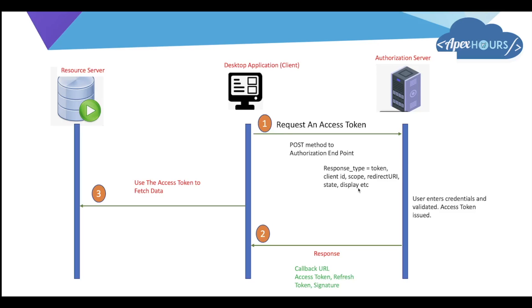Optional parameters like state and display can also be provided. Once you hit the authorization endpoint with the client ID, scope, and redirect URL, the web browser shows a page where you enter your credentials. After entering credentials, the access token is issued in the response callback URL, and you can then fetch data from Salesforce using that access token.